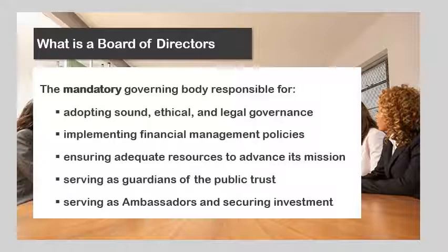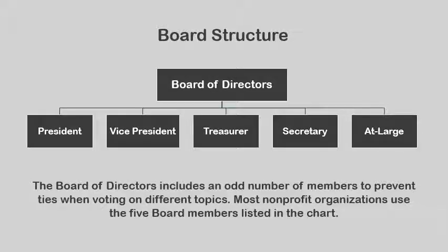When deciding who to invite to serve on the Board of Directors as a volunteer member — because they're not paid — make sure you choose people who you believe will be capable of operating under these guidelines. The Board structure includes five roles: President, Vice President, Treasurer, Secretary, and at-large member. The Board includes an odd number of members to prevent ties when voting. Most nonprofit organizations use these five board members. I provide detailed descriptions of the different board roles in the full class, which is called How to Manage 501c3 Nonprofit Organizations.